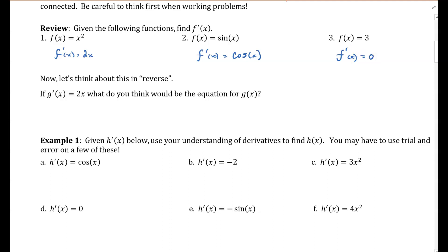So now what we're going to do is think about this in reverse. What if I had a derivative function, g prime of x equal to 2x? What do you think would be the equation for g of x? Well, g of x would be equal to x squared, because we have to undo that differentiation. That 2 came from the power — we can move it back into the power and remove that coefficient.